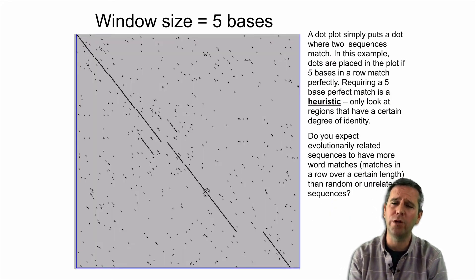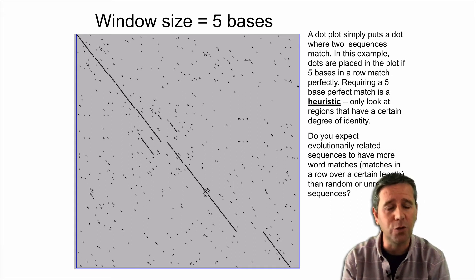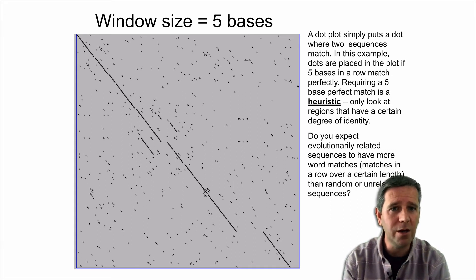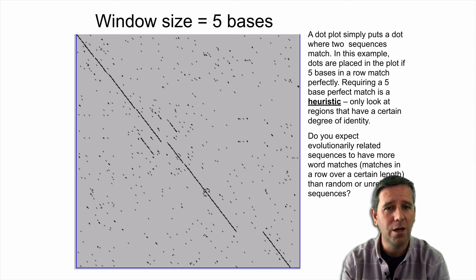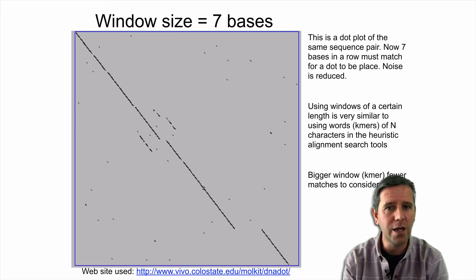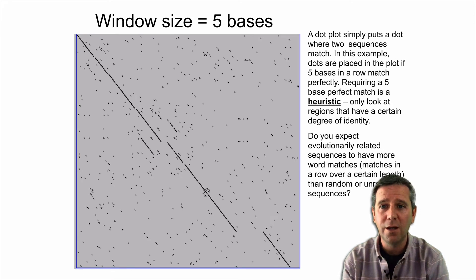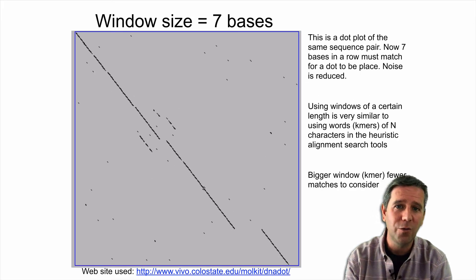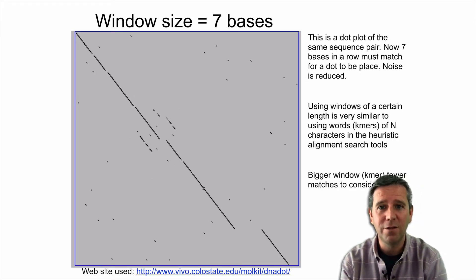So here's a more realistic example rather than little toy short sequences we were walking through. So here is a window size of five. And we can see these long diagonal runs of consecutive dots. Those are the aligned bits we're after in this case. So here is the same with a window size of seven. Let me flip between those two for a moment so you can see the noise filtering effect that we're after here. So again, this is the window size seven. Here's the window size five. Window size seven.